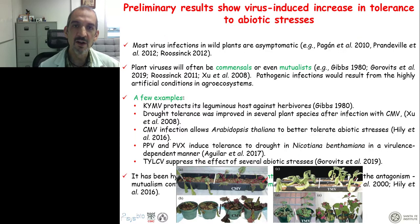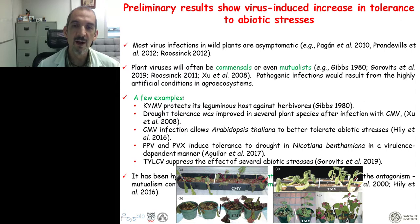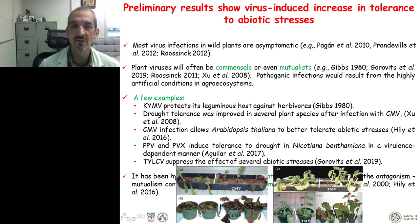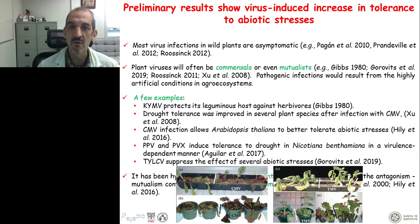Usually we think of viruses as pathogenic entities. Unfortunately, we are facing hard times with the coronavirus, which is a prototypical example of a pathogenic virus. But we know that in nature, viruses are not always pathogenic. In many instances, viruses can be commensal or at least asymptomatic. In particular in plants, most viral infections are asymptomatic in nature — you can go into nature, sample apparently healthy plants, and they contain viruses that produce no symptoms at all. That means most plant viruses in nature are commensal or even mutualistic.